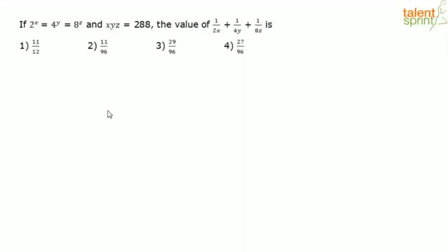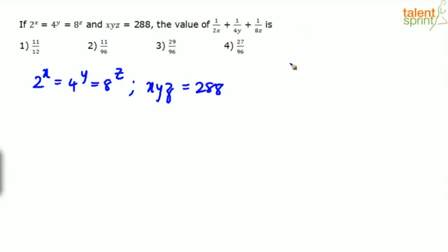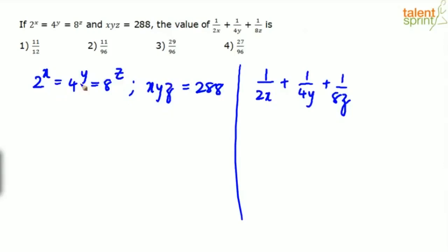New problem: if 2^x = 4^y = 8^z and x·y·z = 288, find the value of 1/(2x) + 1/(4y) + 1/(8z). Substituting random values of x, y, z here would be very complex since the equations are not linear and have many solutions, so we use the regular algebraic approach.